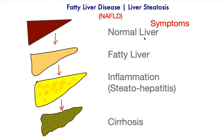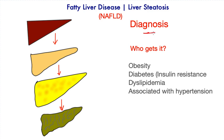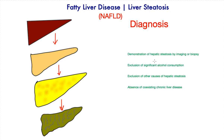This condition is normally diagnosed following blood tests for other reasons or scans that are performed. To diagnose it, you need a high index of suspicion for people in these risk categories. It is important that four conditions are met: demonstration of hepatic steatosis or fatty liver by imaging or biopsy, exclusion of significant alcohol consumption, exclusion of other causes of fatty liver, and absence of coexisting chronic liver disease due to other causes.